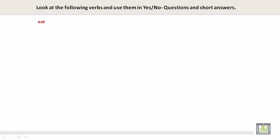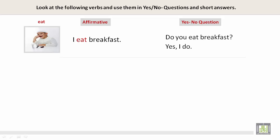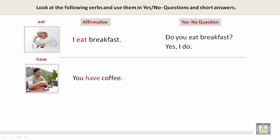Look at the following verbs and use them in yes or no questions and short answers. Eat — Affirmative: I eat breakfast. Yes or no question: Do you eat breakfast? Yes, I do. Have — Affirmative: You have coffee. Yes or no question: Do you have tea? No, I don't.